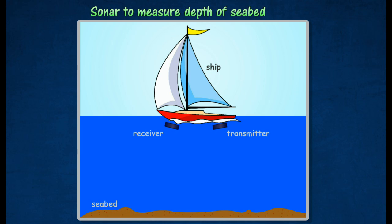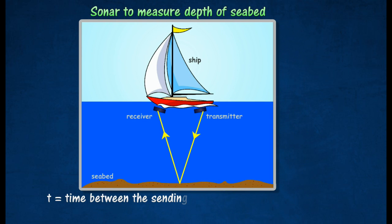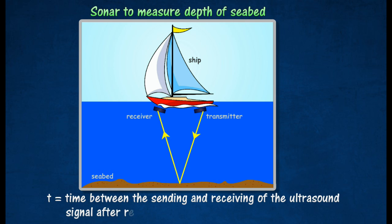To measure depth, an ultrasound signal is sent out from a transmitter fitted to the hull of a ship. Waves are reflected by the seabed. A hydrophone receives the reflected waves and converts them to electrical pulses. The time interval t between the sending and receiving of the ultrasound signal after reflection from the seabed is measured electronically.